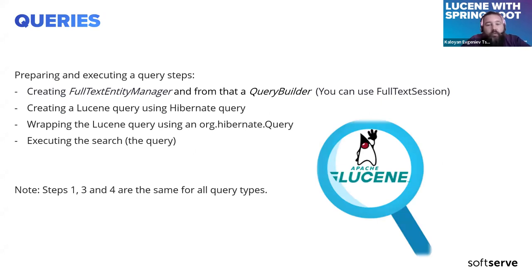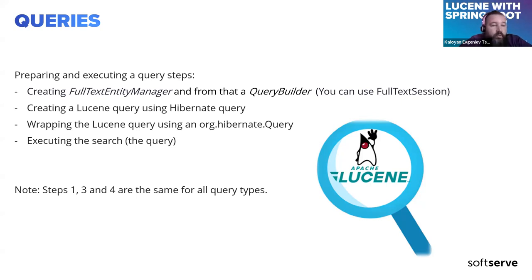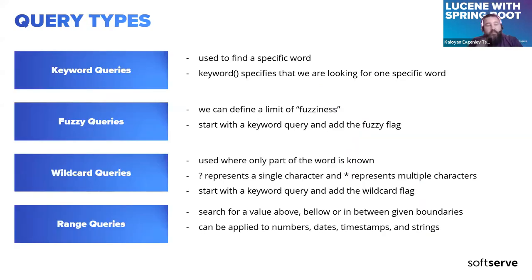To run a query, you need to invoke methods on the FullTextSession (which extends Hibernate's native session) or use FullTextEntityManager (which extends the JPA EntityManager) — you can use either one. In my code, I'm using FullTextEntityManager, from which I create a query builder. The next step is to create a Lucene query using Hibernate's query DSL and wrapping it. Finally, we execute the search by executing the query itself. Steps one, three, and four are the same for all query types.